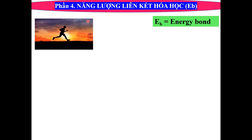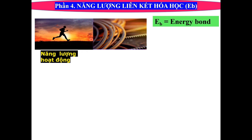Ví dụ trong cuộc sống sinh hoạt hằng ngày, để có năng lượng chúng ta phải ăn. Cái năng lượng để cho cơ thể này hoạt động thì chúng ta phải cấp năng lượng, có nghĩa là năng lượng nó là dương. Ví dụ như chúng ta cần một cái lực hay gọi là một cái năng lượng lớn để bẻ thanh sắt, thì đây cũng là một dạng năng lượng dương.